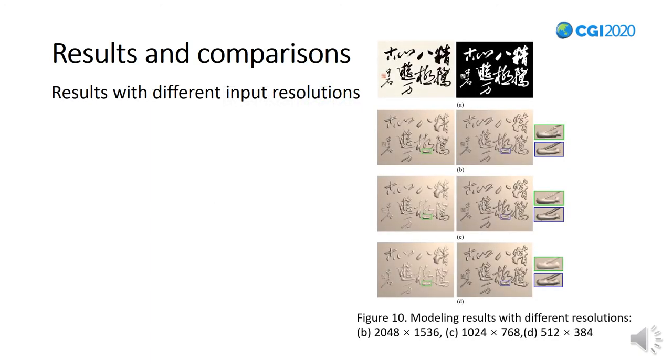Figure 10 shows the artwork written by Ouyang Zhongshi. For this example, we generate the reliefs with different input resolutions. As resolution increases, more height details can be encoded in the final reliefs.